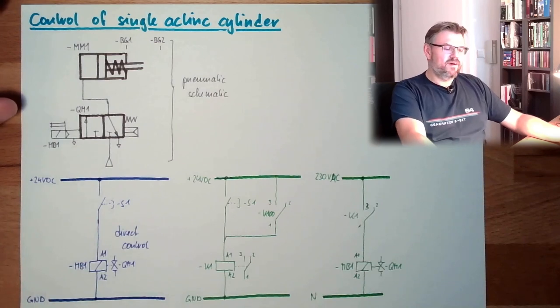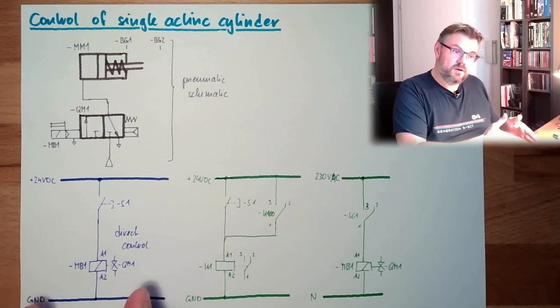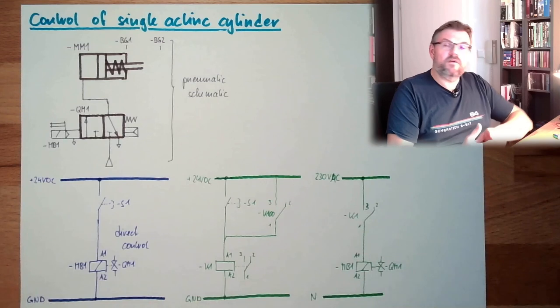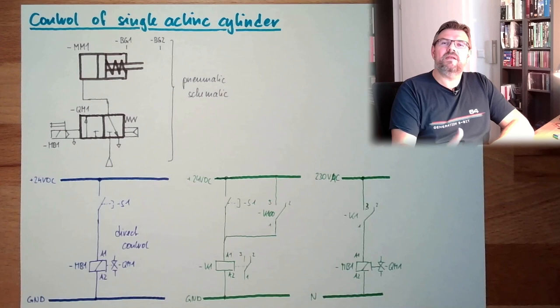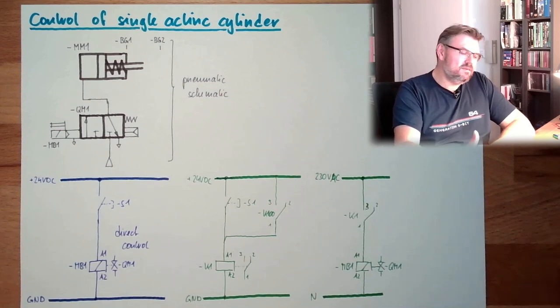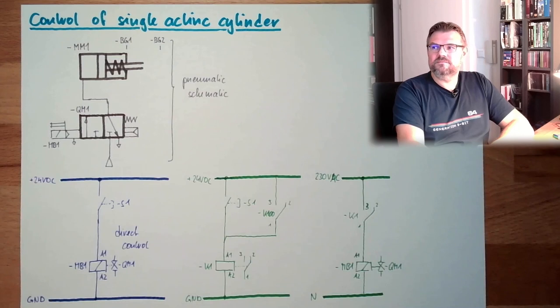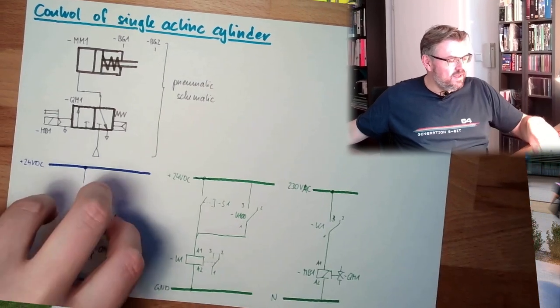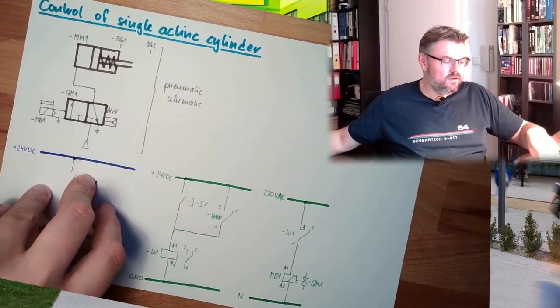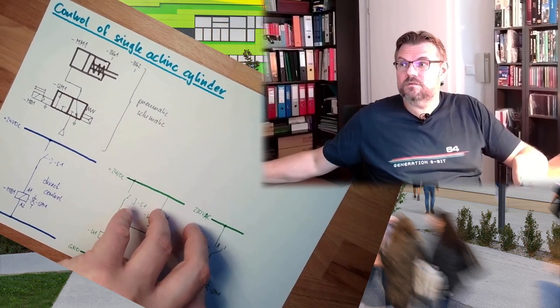This is the usual approach, indirect. There's more advantage. It's more effort, so if you have easy applications this one is cheaper. But for more complex things, use indirect control. Works better, is more maintainable. Control of a single-acting cylinder, this is how you can do it. Pneumatic schematic, electrical wiring plan, circuit diagram. One version, second version.